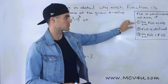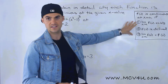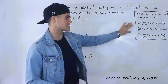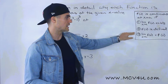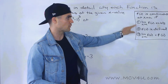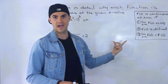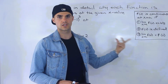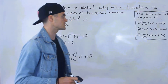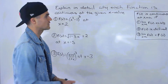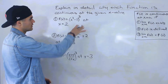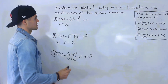Remember that the limit as x approaches a of f(x) has to exist, f(a) has to be defined, and then conditions one and two both have to equal each other. Then the function is continuous at that x value. So I'm going to go through those conditions for each of these.